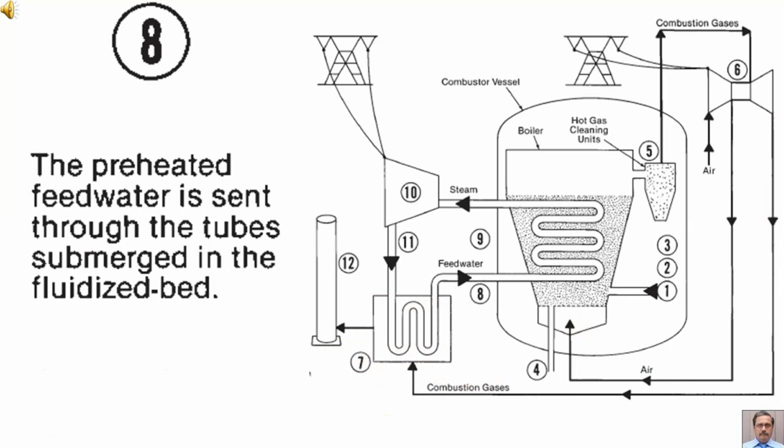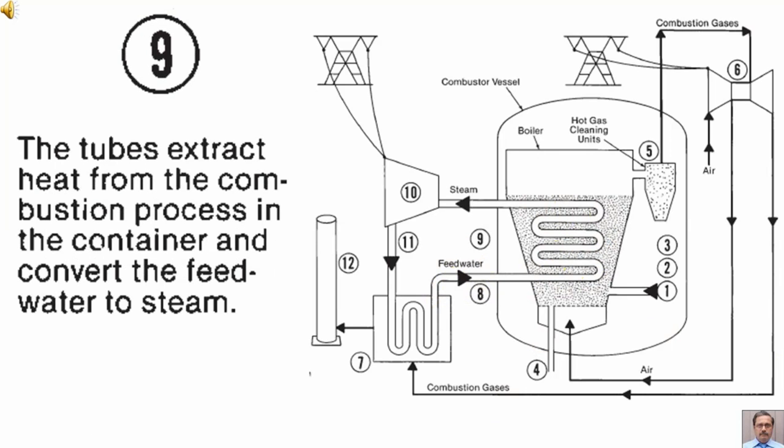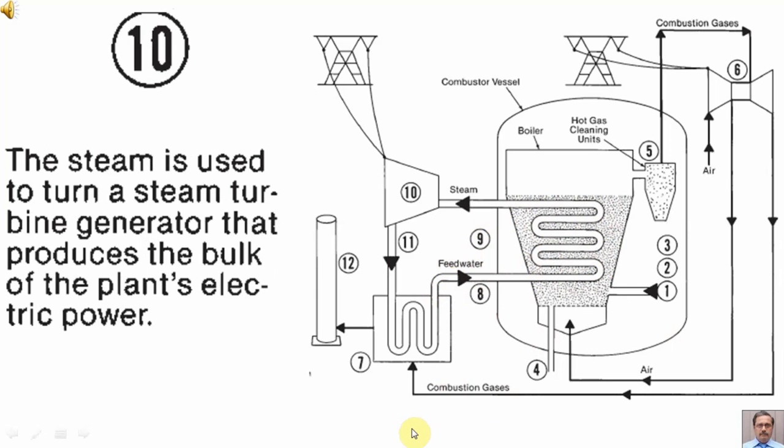Tag number 8. The preheated feedwater is sent through the tubes submerged in the fluidized bed. The tubes extract heat from the combustion process in the container and convert the feedwater to steam. The steam is used to turn a steam turbine generator that produces the bulk of the plant's electric power.